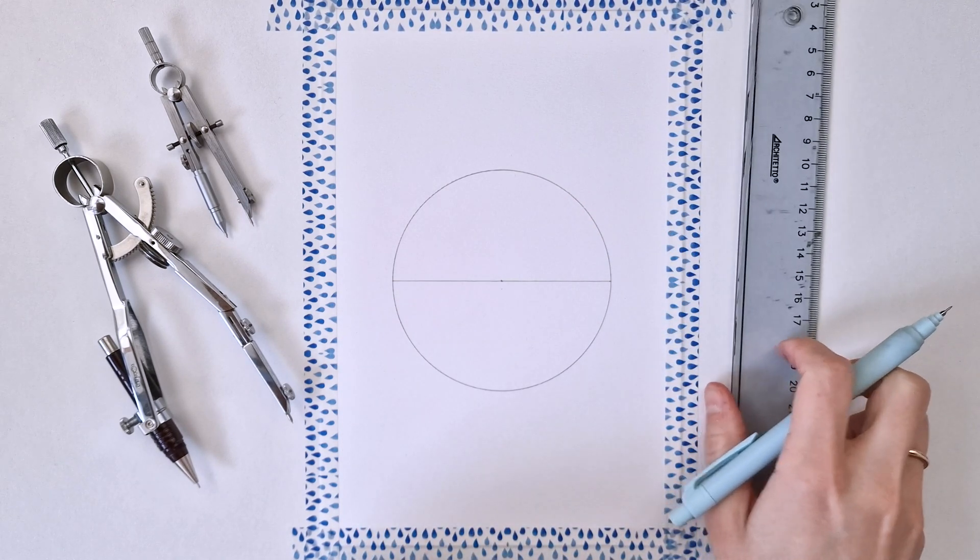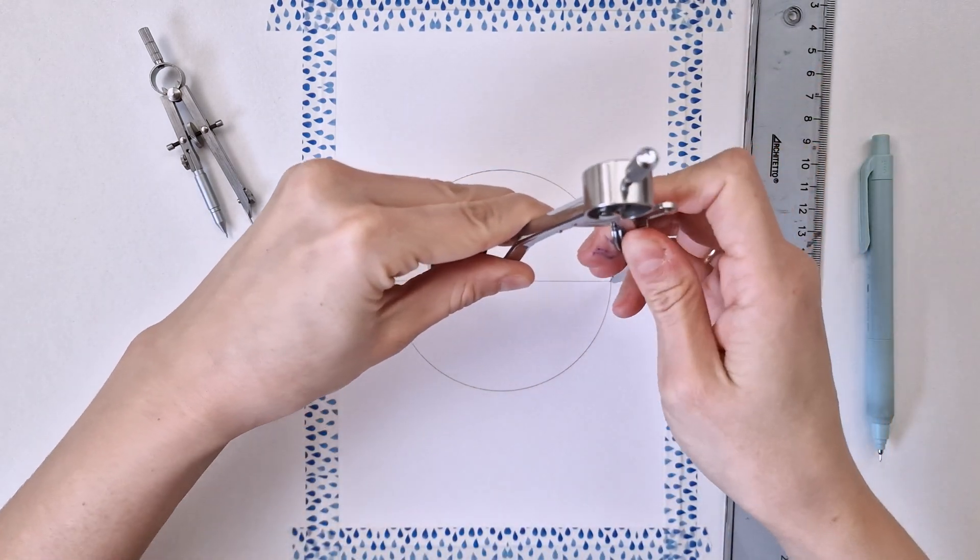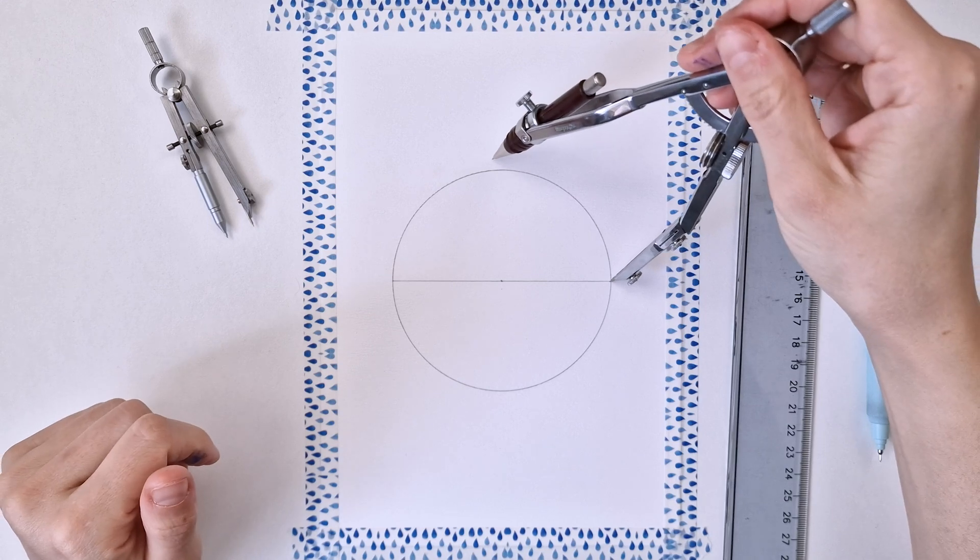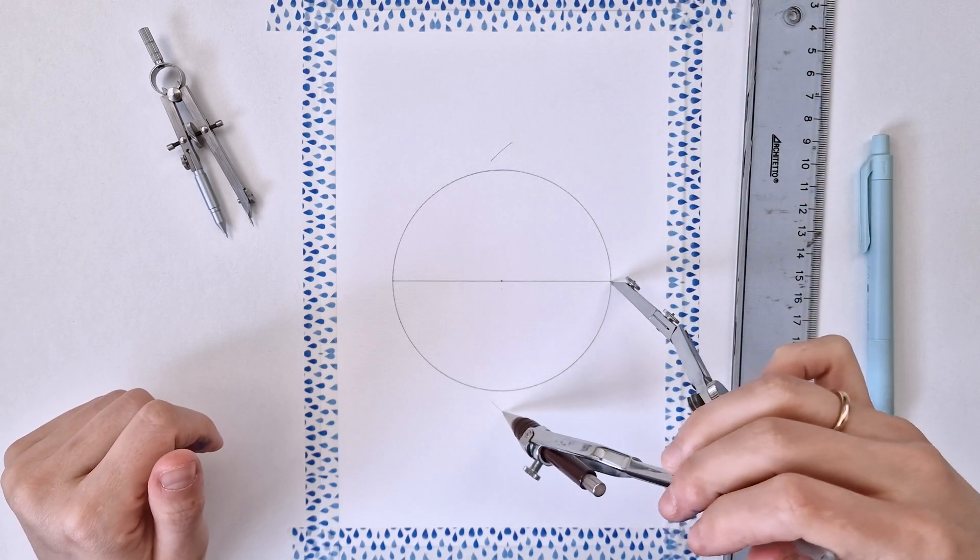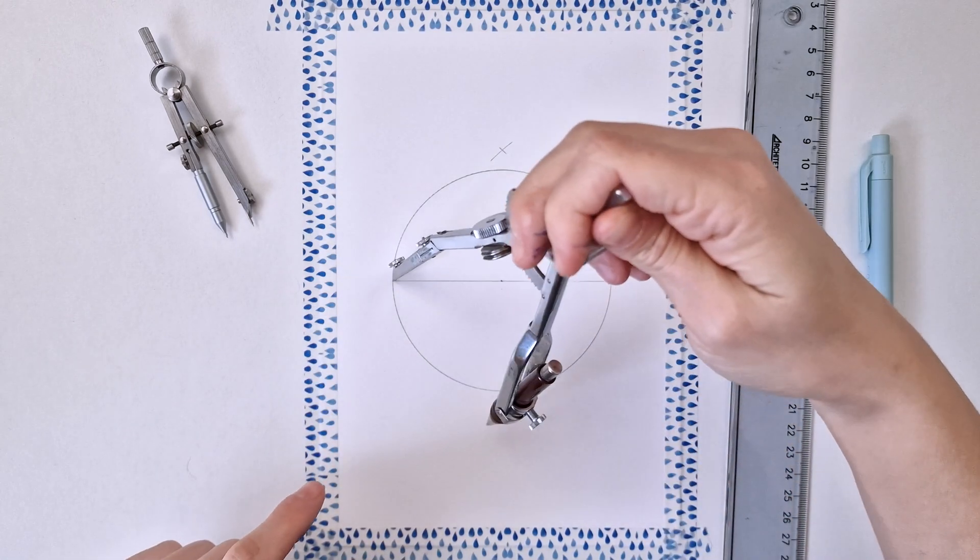Next thing, I'm grabbing my compass back again, pointing into this intersection, opening to two thirds of the diameter and making two marks, actually four marks, just like this.